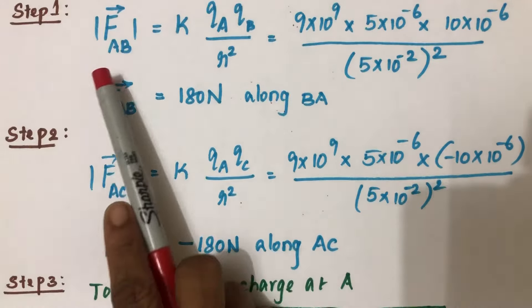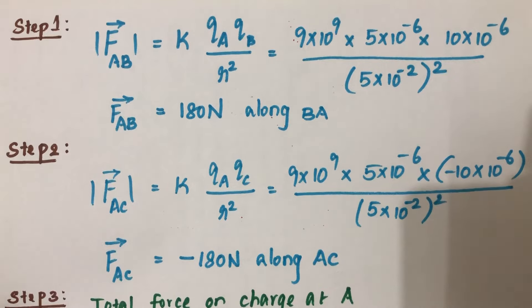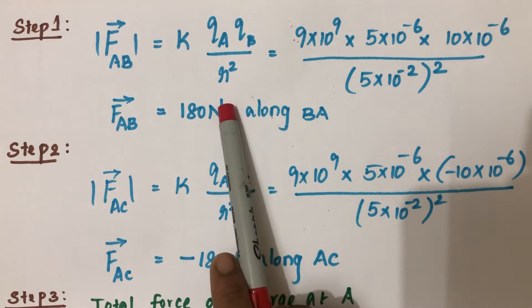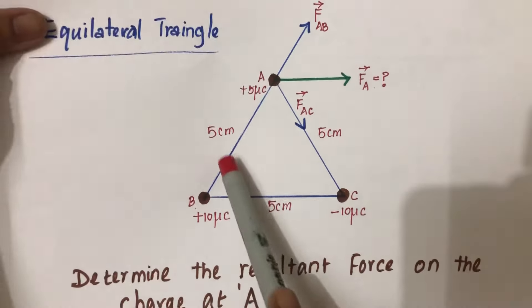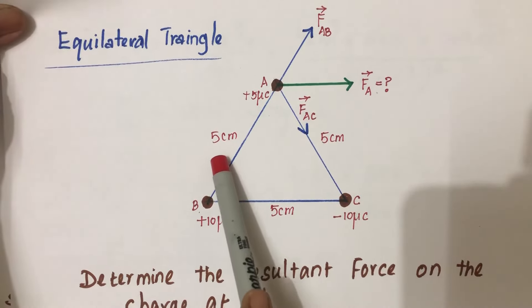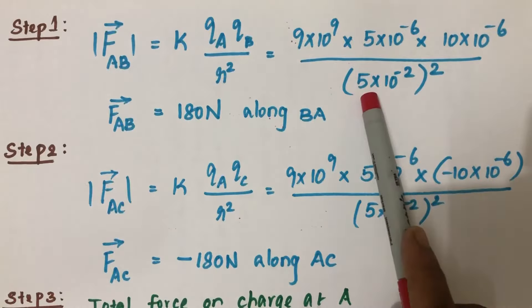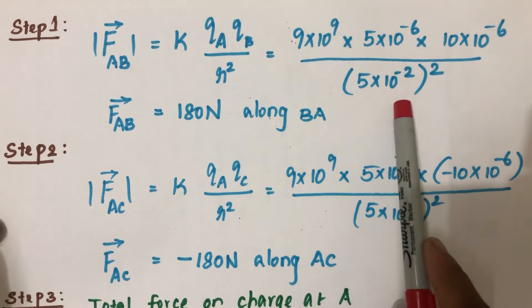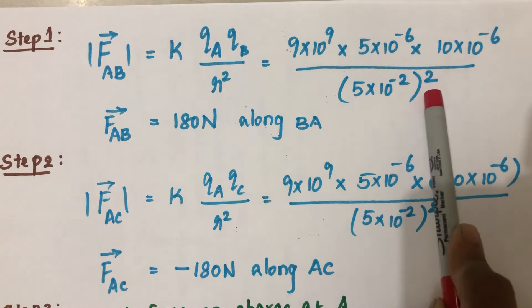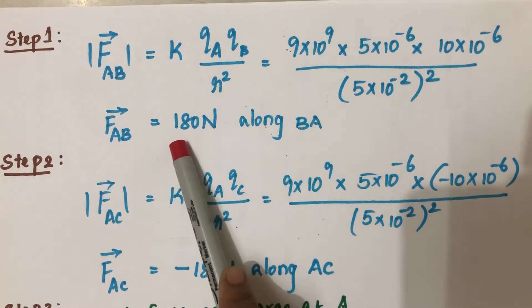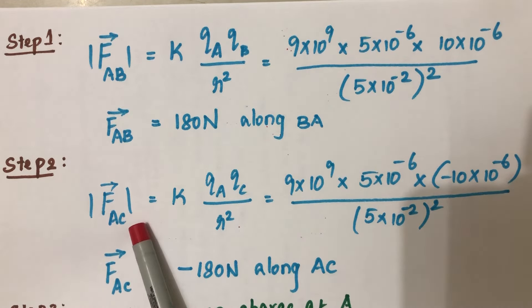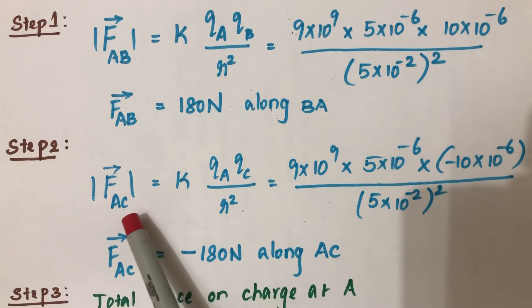The first step is to calculate the magnitude of FAB. We know it is k*QA*QB divided by R squared. R is given since it's an equilateral triangle—all sides are equal to 5 centimeters. Convert centimeters to meters: 5×10^-2, and please don't forget to square this distance. You'll get 180 Newtons along BA.